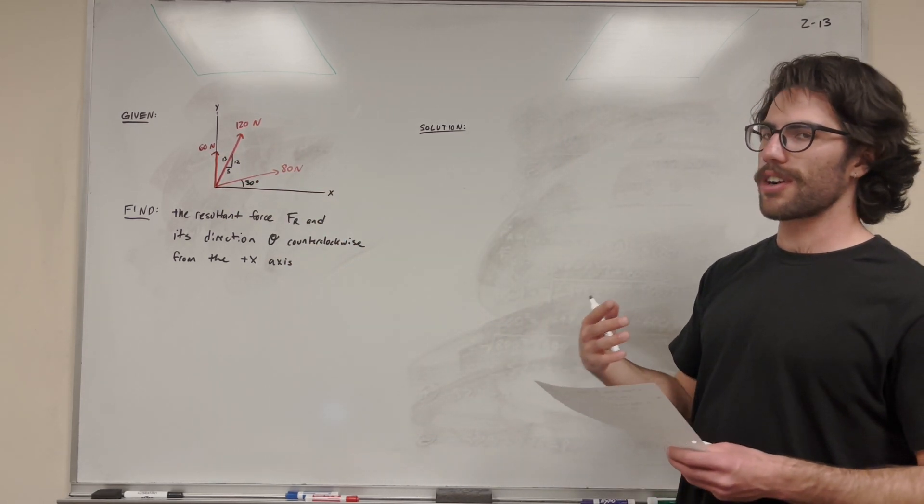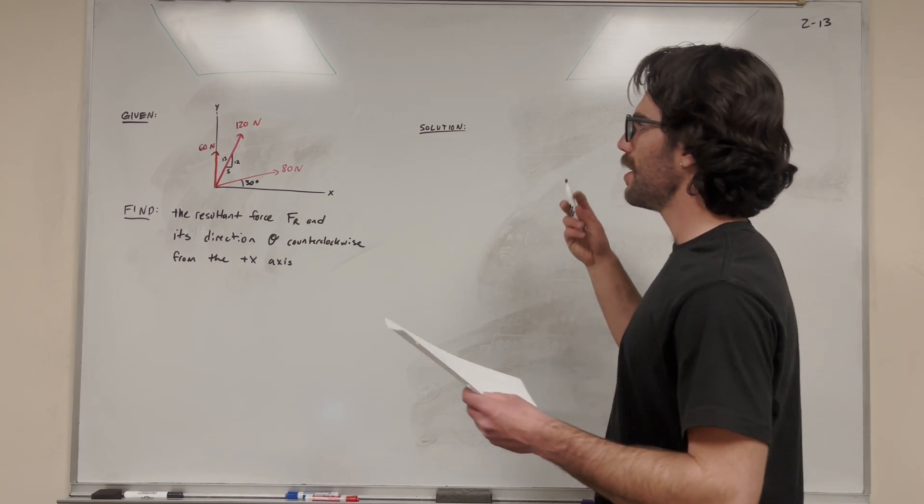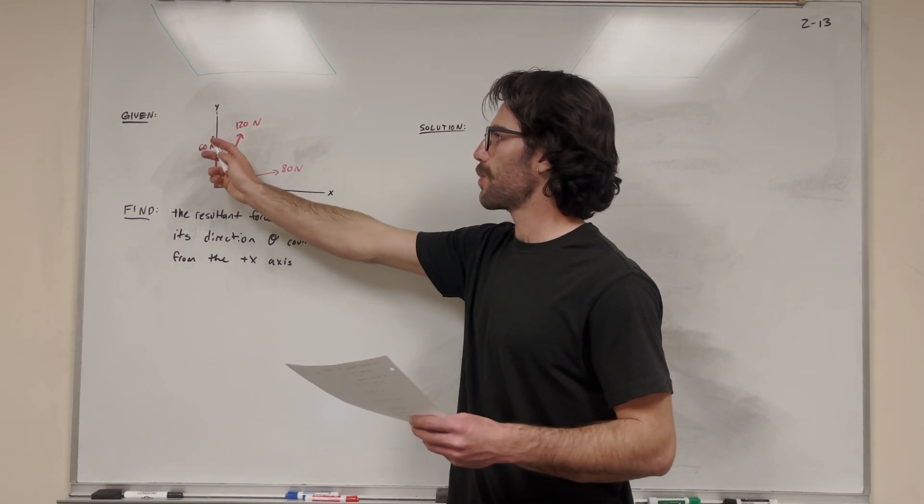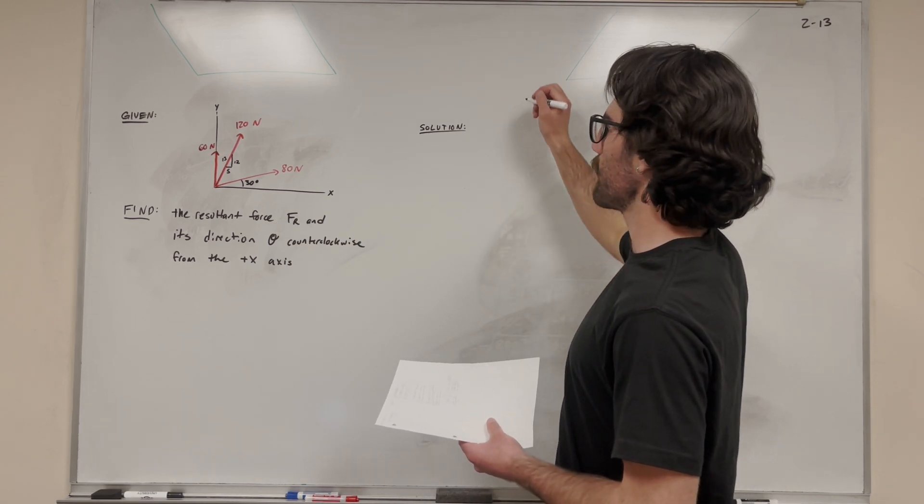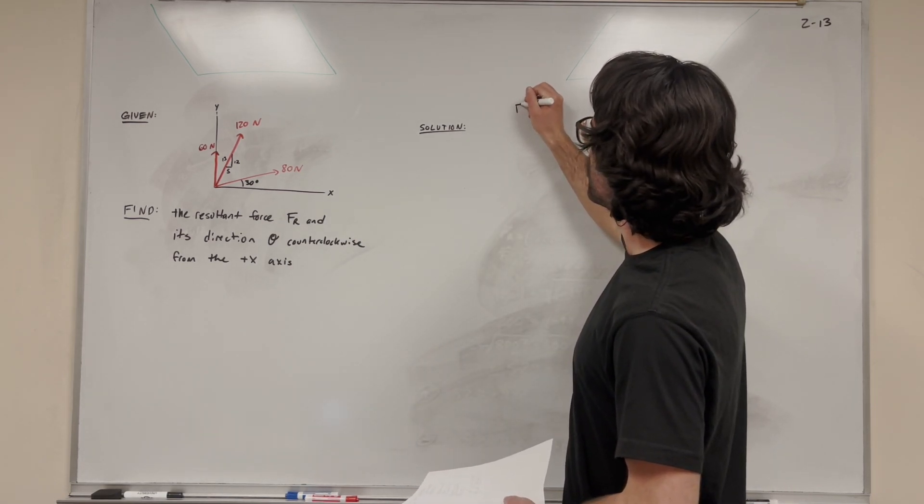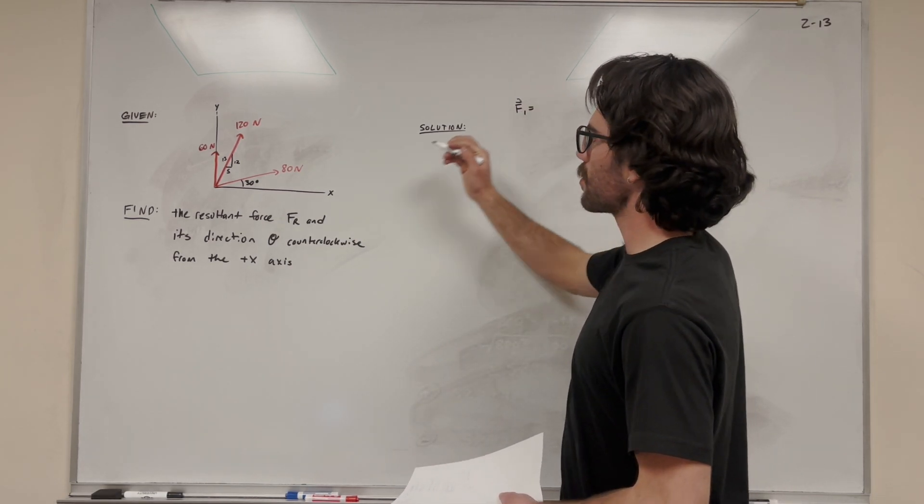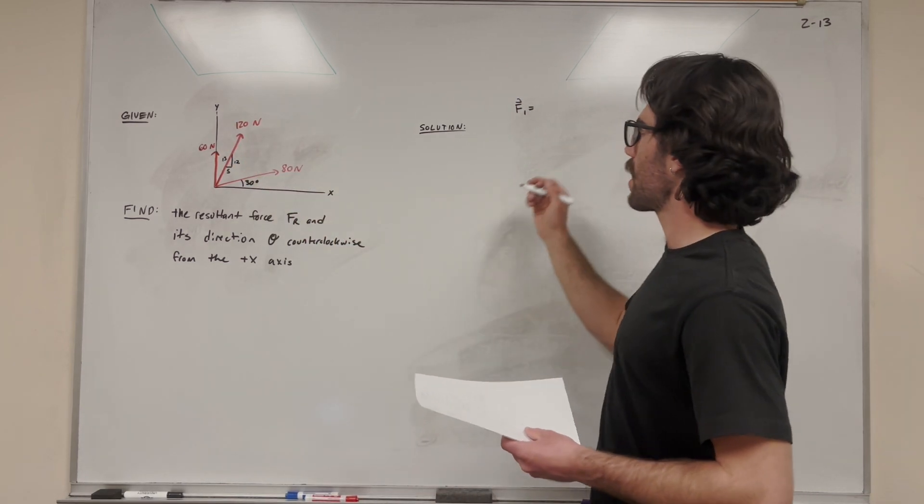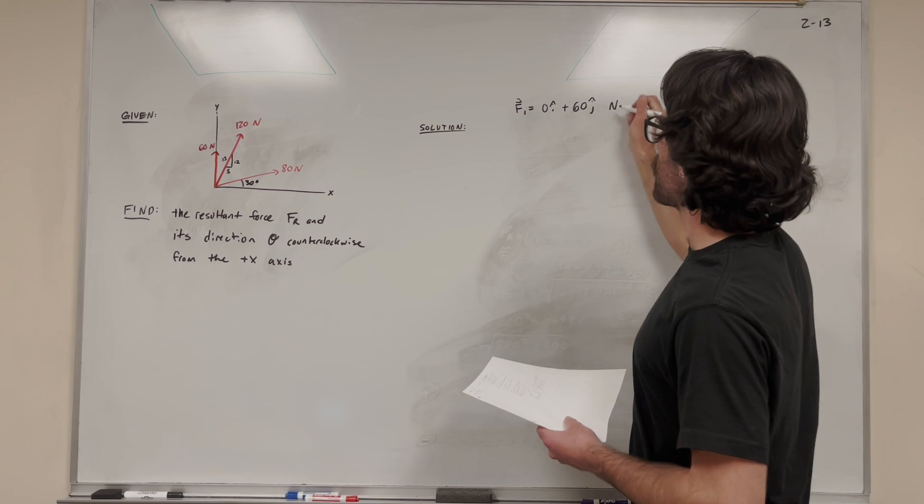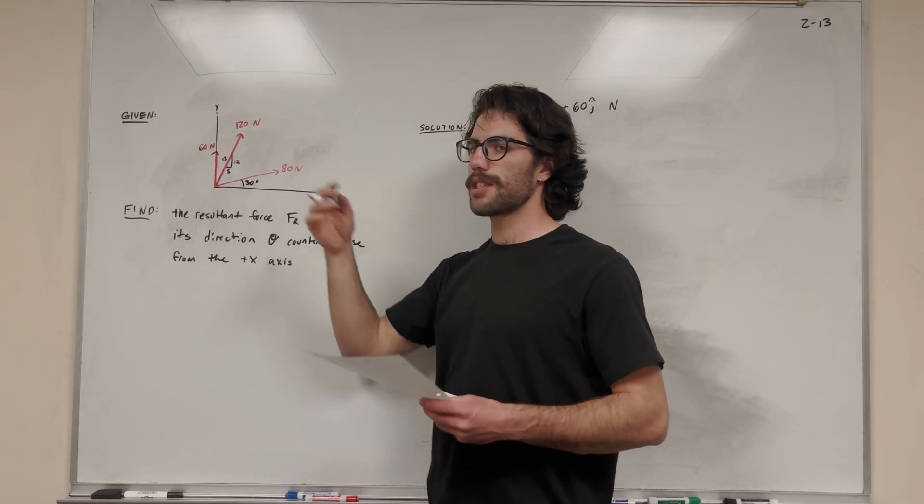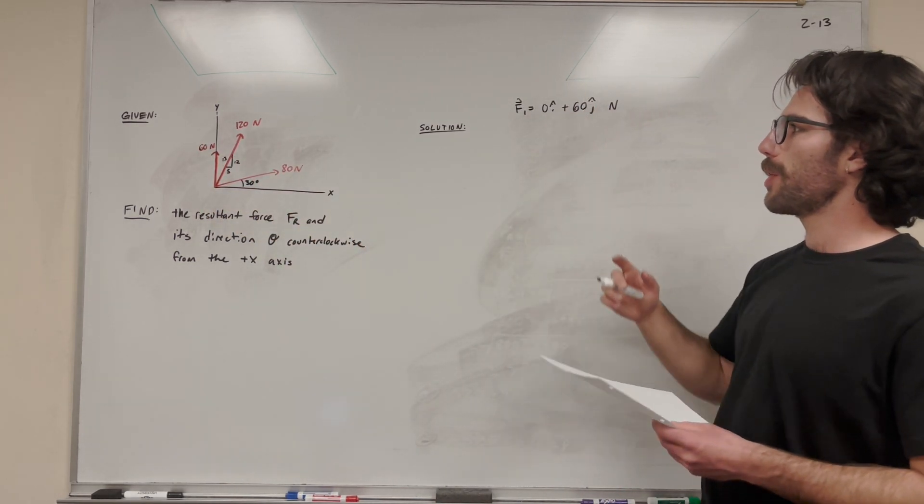So let's break them down into our Cartesian vector format. Let's start with this one. This is force 1, force 2, force 3. Let's start with force 1 and go through each one of these, converting them to their Cartesian vectors. So force 1 is simple enough, right? It goes straight up. So that means it's going to have a 0i component, a positive 60j component, because it's pointing all in the y direction. So it's all pointing in the j component.